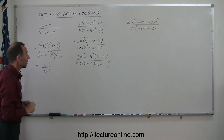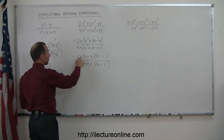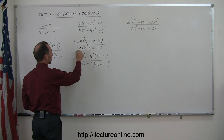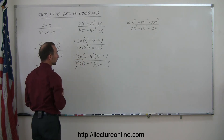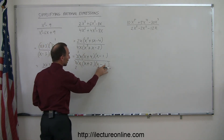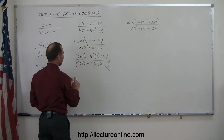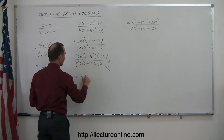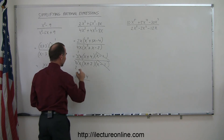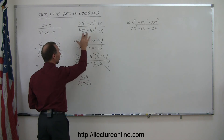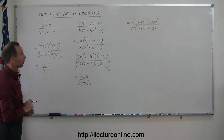Now we can simplify. We can cancel an x from the numerator with the x in the denominator, and 2 and 4 are both divisible by 2 — so 2 becomes 1 and 4 becomes 2. We also have (x − 1) in both numerator and denominator, so those cancel. We're left with (x + 4) in the numerator and 2(x + 2) in the denominator — that's the simplified form of this rational expression.